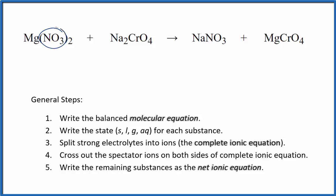I see that I have two of these nitrate ions here but only one over here. Put a two in front of the sodium nitrate, that balances the nitrates. I have two sodiums, two sodiums, the chromate ion here and here, and then magnesium and magnesium. So this is the balanced molecular equation.